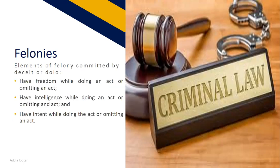For an act or omission to be considered a felony by means of deceit or dolo, the person must have freedom while doing or omitting the act — the lack of freedom makes one merely a tool — and must have intelligence while doing or omitting the act. The distinction between intentional felony and culpable felony: in intentional felonies, the act or omission of the offender is malicious — the act is performed with deliberate intent or with malice, which is the intent to do injury to another person, property, or rights.